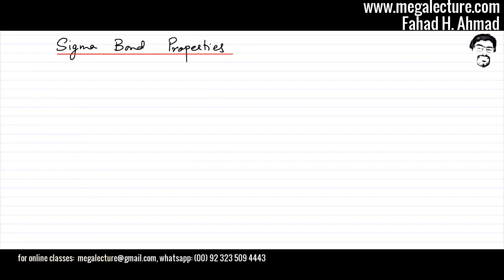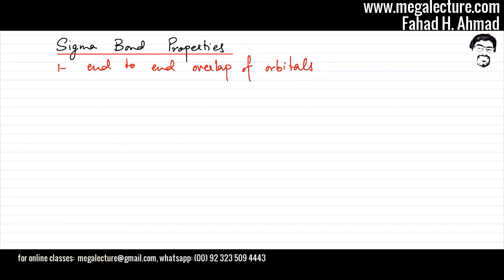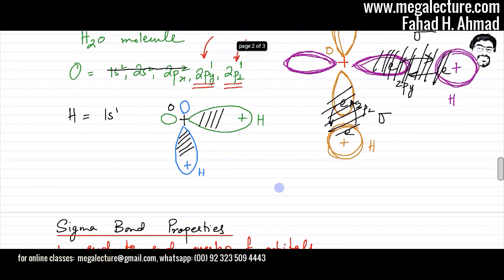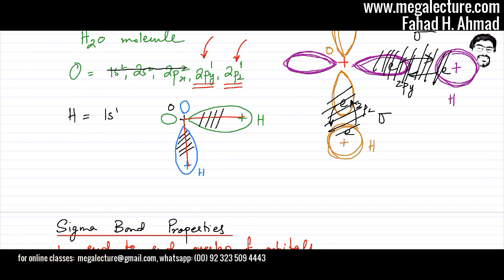Since we have a basic idea of sigma bonds, let's discuss sigma bond properties. First, sigma bonds are formed from an end-to-end overlap of orbitals, as shown in our previous examples. Second, the electron density lies on the axis connecting the two nuclei — in the water molecule example, the electron density is exactly on the line between the two nuclei.